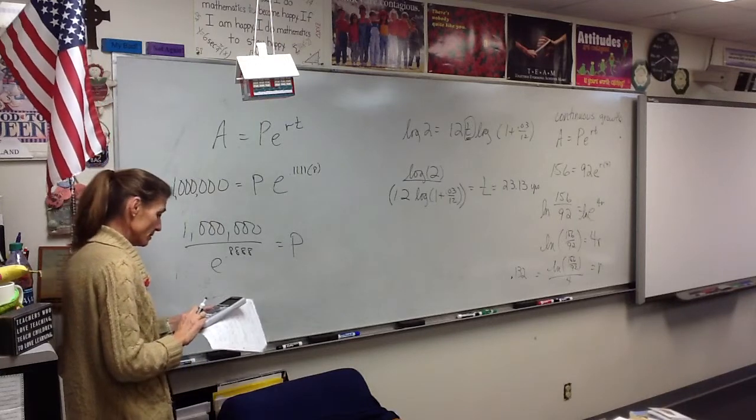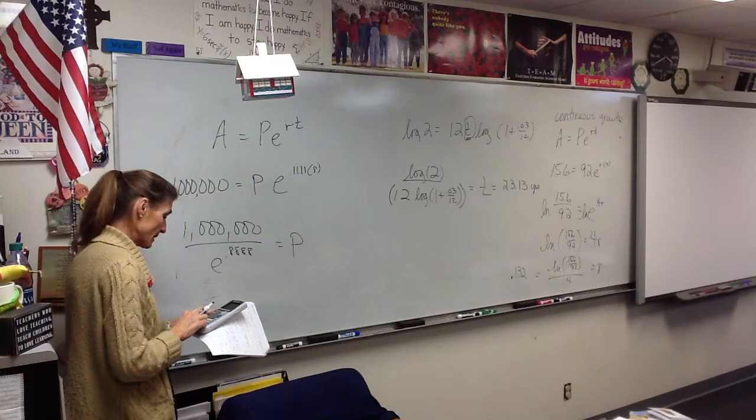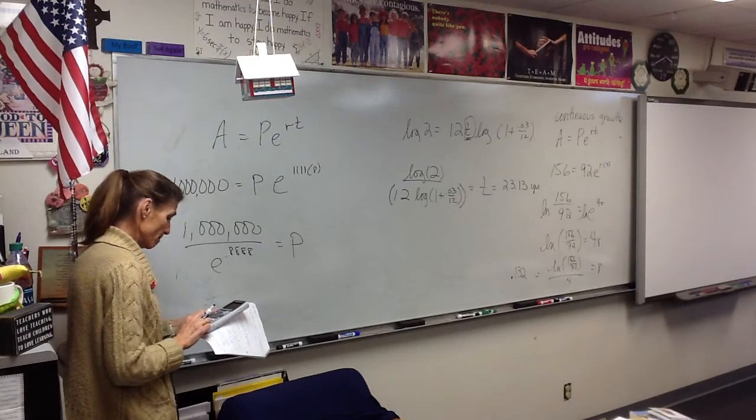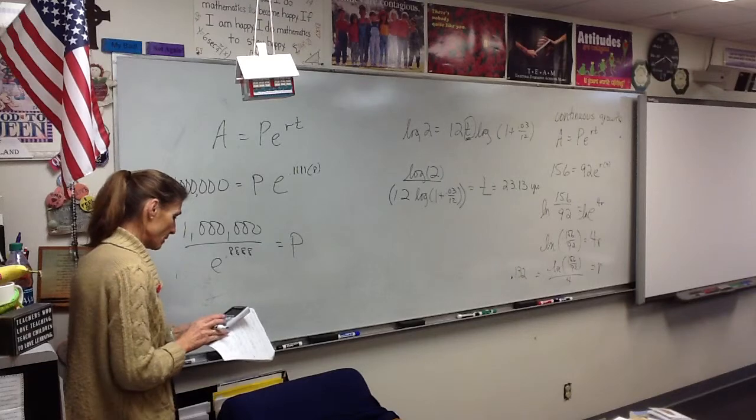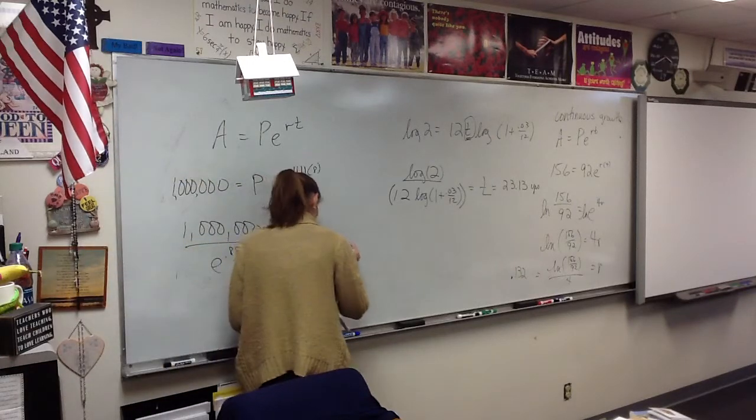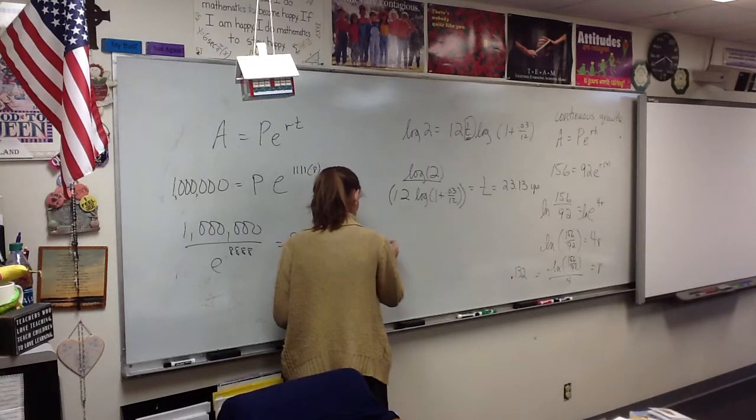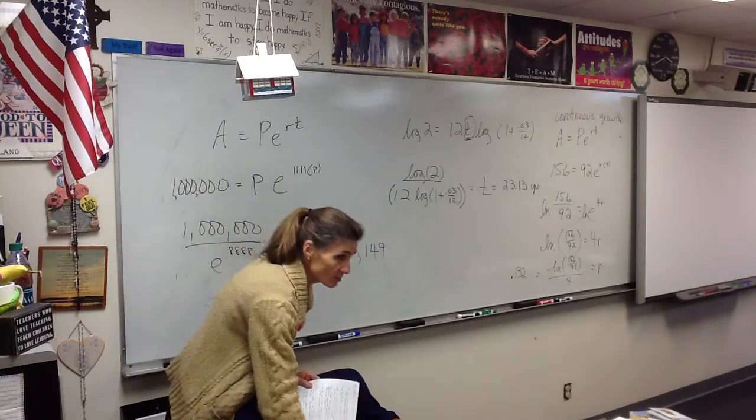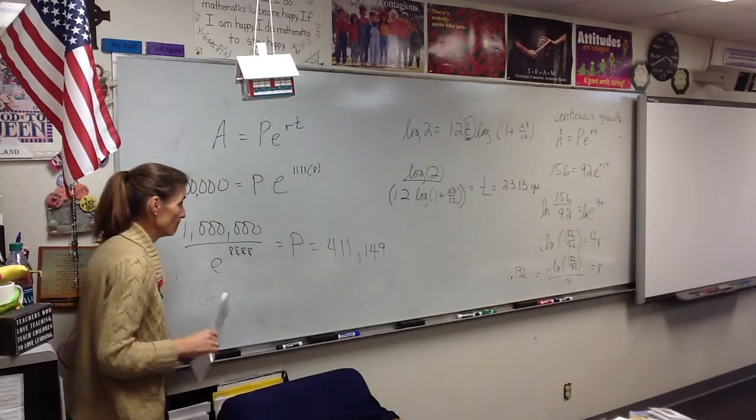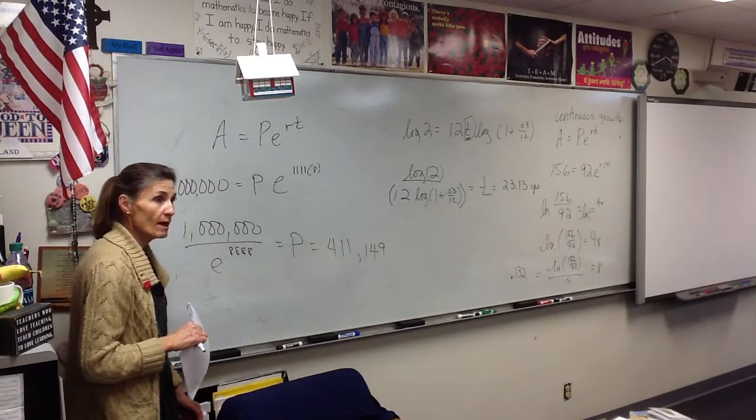Don't I just need to divide by this? So the answer is... I think we started with 411,149 of them. But remember, these are bacteria. So let's round off to the whole unit. Everybody okay with that?